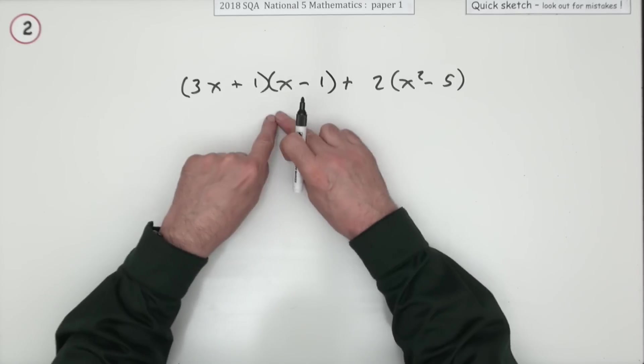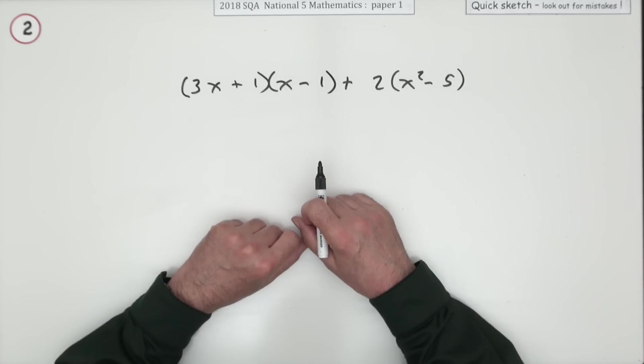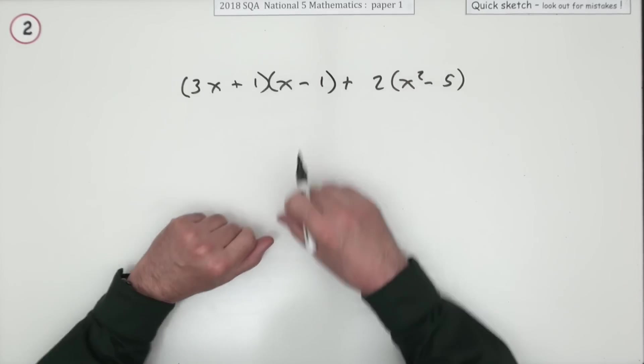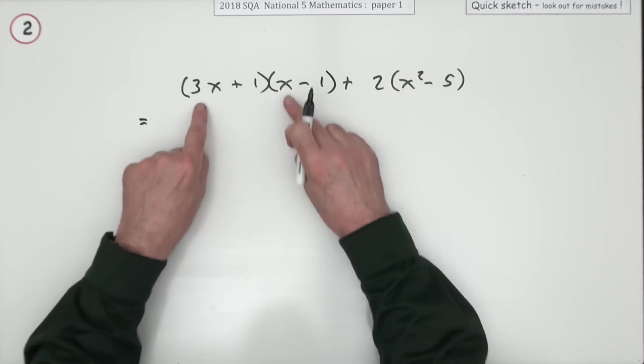Number 2 then, for 3 marks, it says expand and simplify. Well, you could write that the long way of 3x times the bracket plus 1 times the bracket. But you should be able just to do it by inspection.